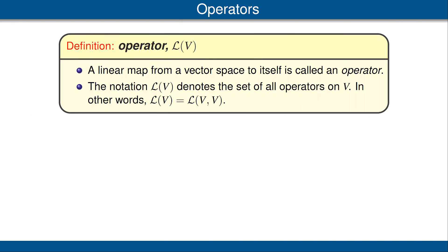We have been discussing linear maps from a vector space V to another vector space W. However, the situation where we have a linear map from a vector space V into itself is so important that we give it a special name. Specifically, a linear map from a vector space to itself is called an operator. We also simplify the notation in that case: instead of writing L(V, V), we usually write just L(V). An operator means a linear map from a vector space into itself.